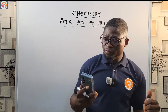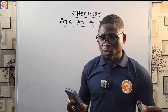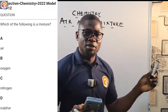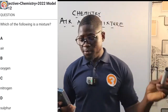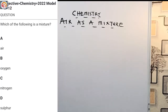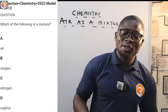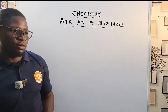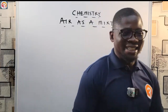Let us see a question from the app. This is a 2022 chemistry question, number 12. They say: which of the following is a mixture? A — air, B — oxygen, C — nitrogen, D — sulfur. We'll come back to the question, but first let us look at this topic in detail.